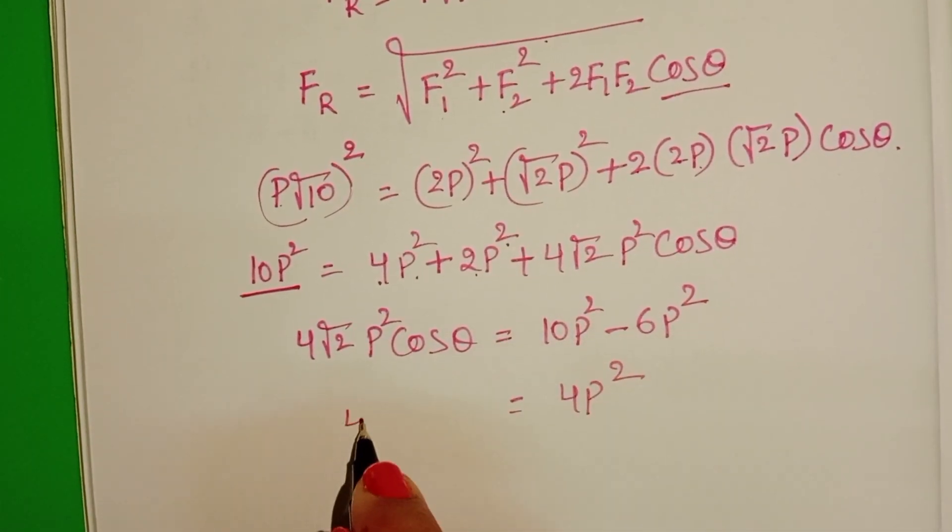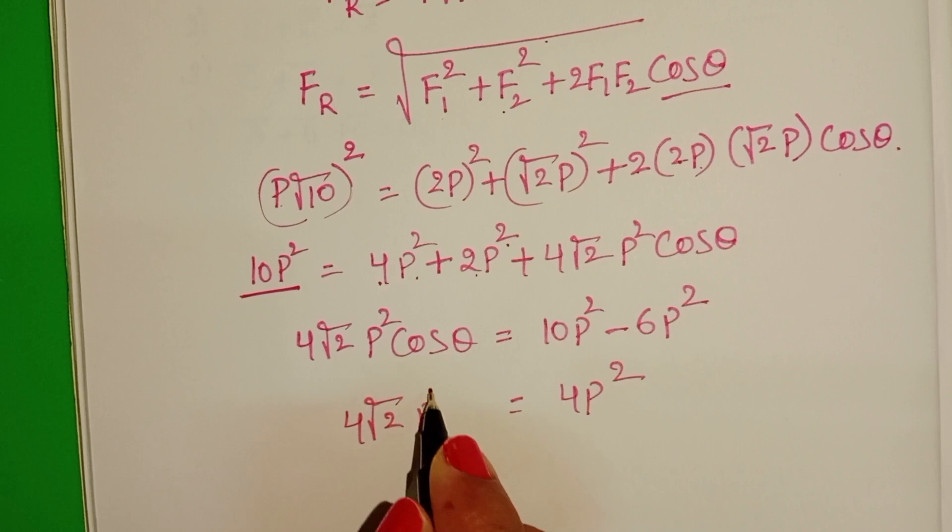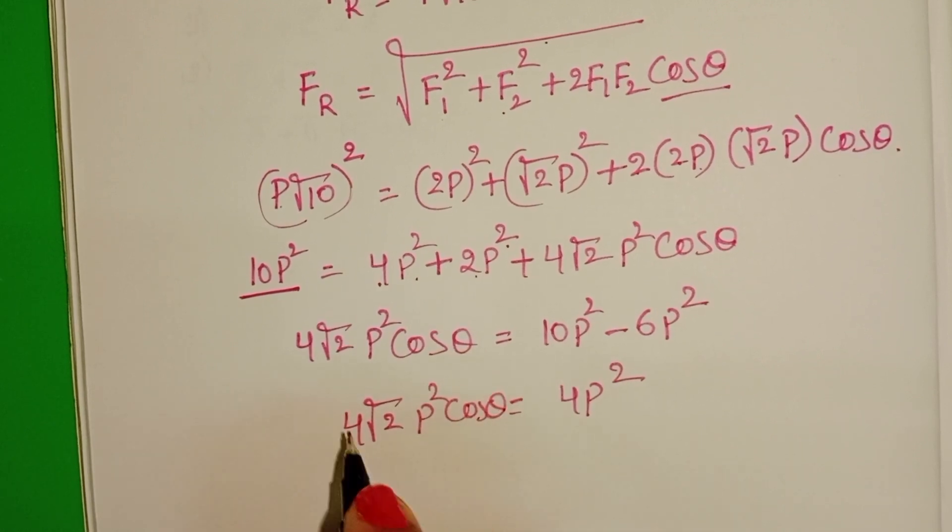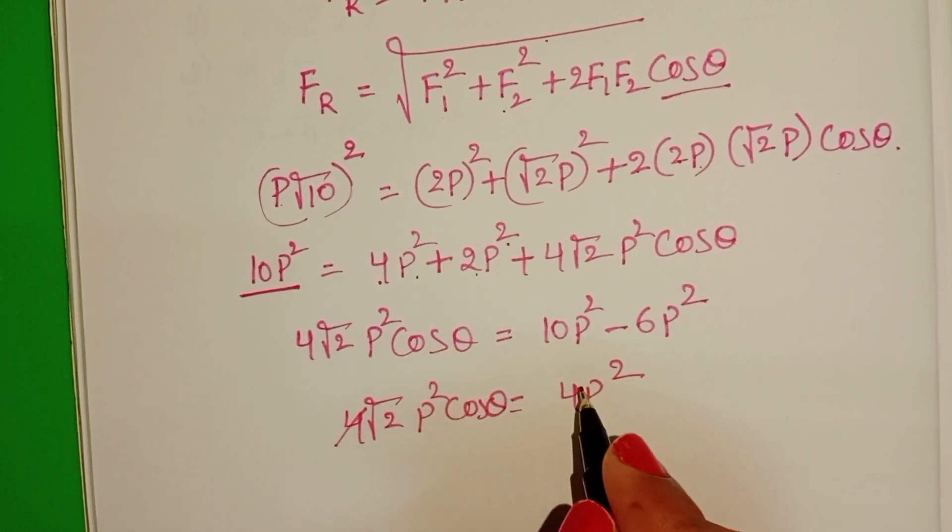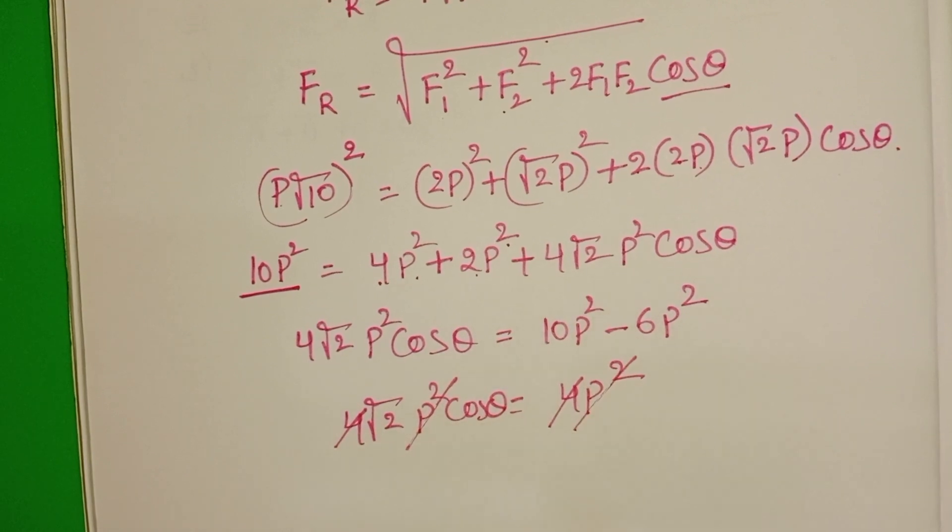4P square on the left side, 4 root 2P square cos theta on the right. On both sides 4P square get cancelled.